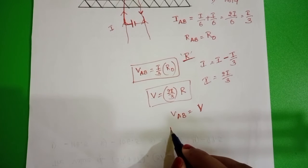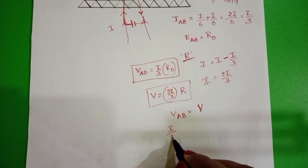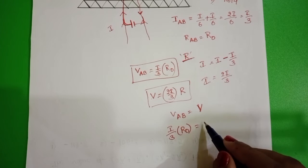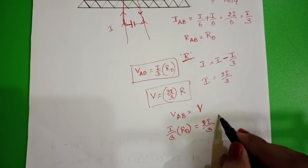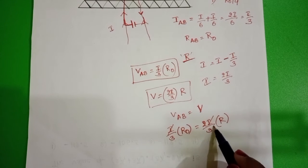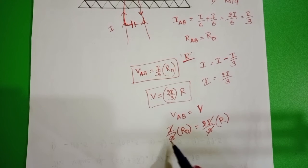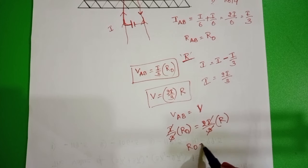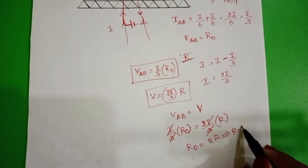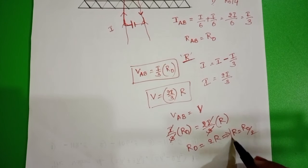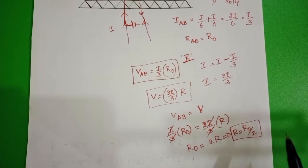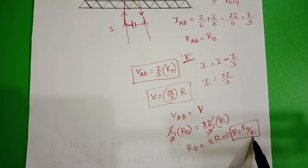Since the potential difference is the same, VAB equals V. So (I/3)·R0 = (2I/3)·R. On both sides, I and 3 cancel, giving R0 = 2R, and therefore R = R0/2. So the resistance of the remaining grid circuit is R0/2.